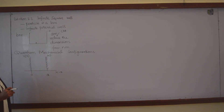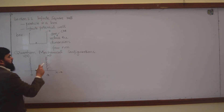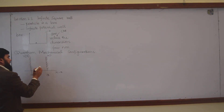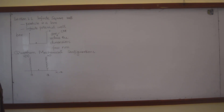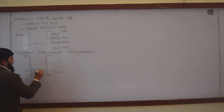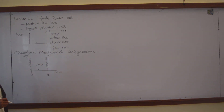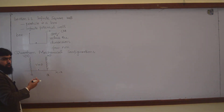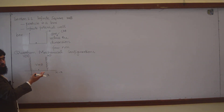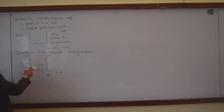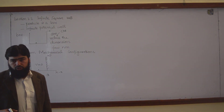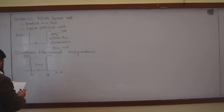We consider infinite potential because the particle is not able to move across this barrier. The reason for considering infinite potential is that the particle remains inside this box. Inside the box, the particle moves freely — the potential is equal to zero inside. When potential is zero, there is no force, because force is the negative gradient of potential. So inside the box there is no force on the particle, and the particle is free to move.